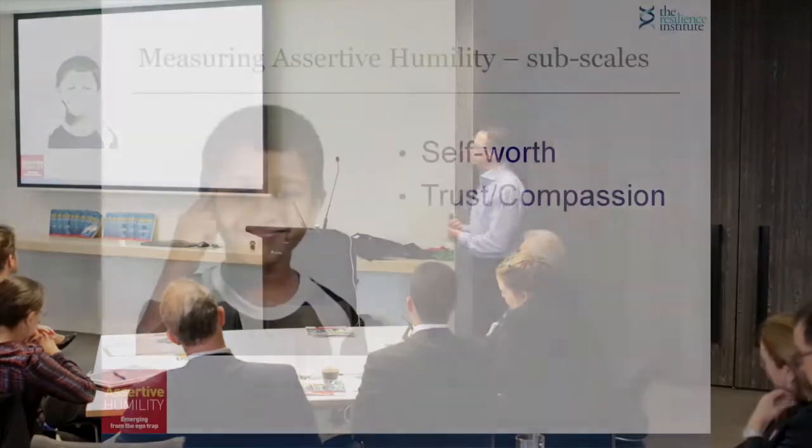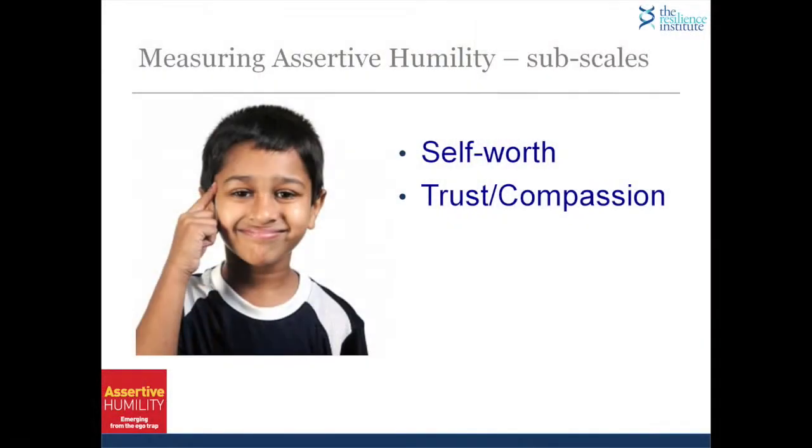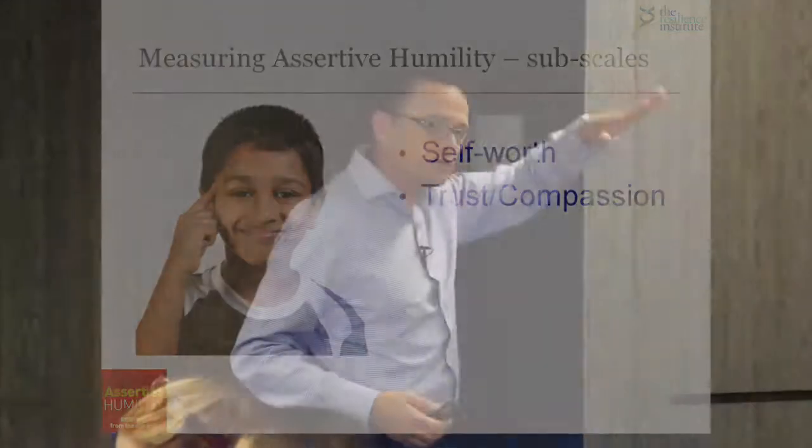The second sub-scale is trust and compassion. If we think about self-worth as the intra-personal dimension, this is the inter-personal. How am I playing on that? Do I truly choose to care about others? Do we really truly choose to care about others?